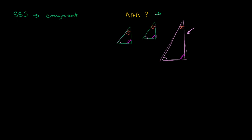So angle, angle, angle does not imply congruency. What it does imply — and we haven't talked about this yet — is that these are similar triangles. Angle, angle, angle implies similar triangles. Similar has a very specific meaning in geometry: similar things have the same shape, but not necessarily the same size. So anything that is congruent, because it has the same size and shape, is also similar. But not everything that is similar is also congruent.